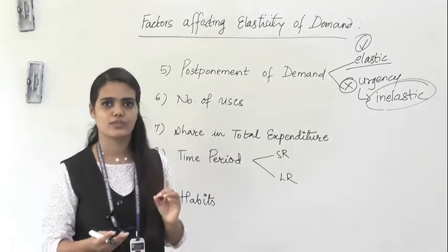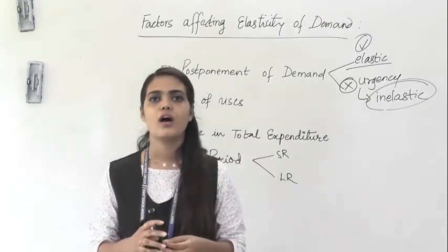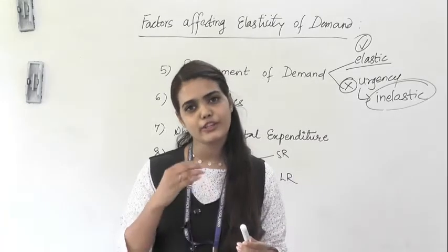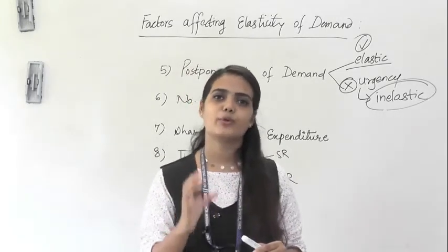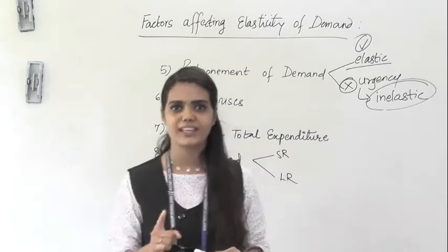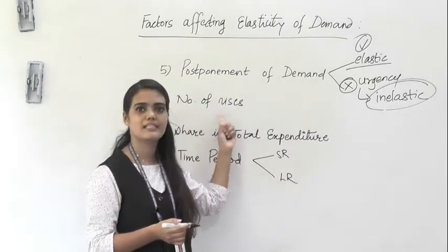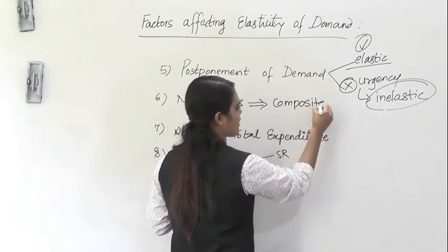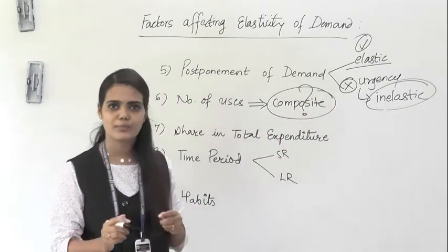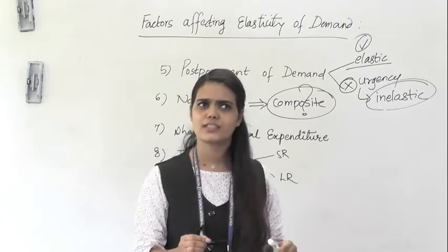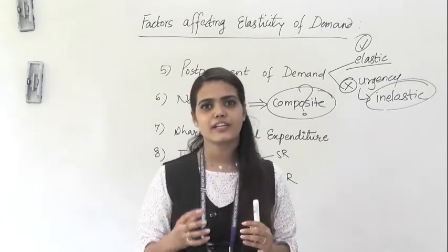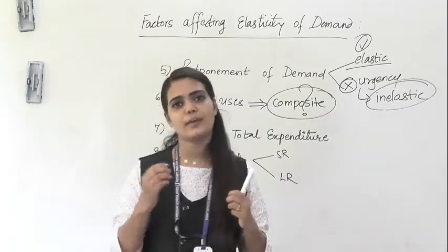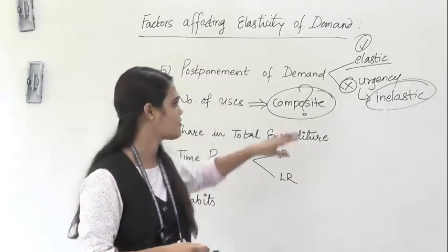The next factor is number of users. A very important term here is composite demand — meaning the product can be used in multiple ways. Number of users means the product has a composite demand. Composite means, for example, electricity or water — these are resources you might use for any number of purposes. Those commodities which can be used for multiple purposes have composite demand.